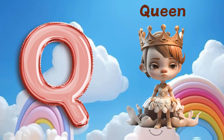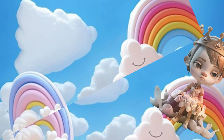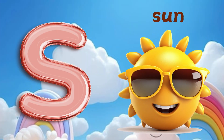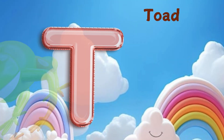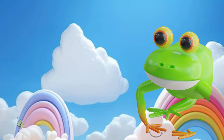Q is for queen, k-k-queen. R is for rabbit, r-r-rabbit. S is for sun, s-s-sun. T is for toad, t-t-toad.